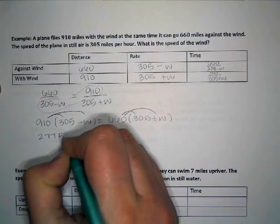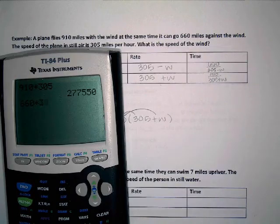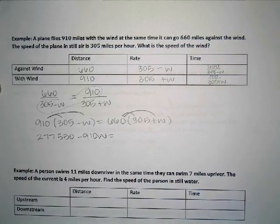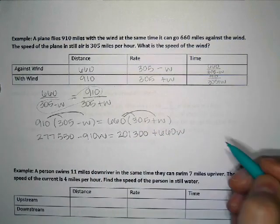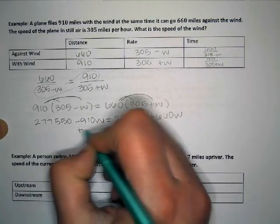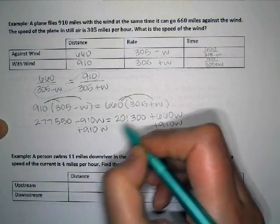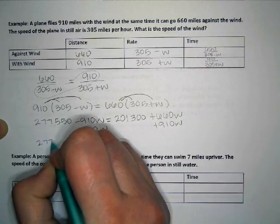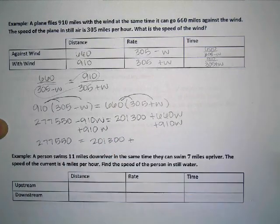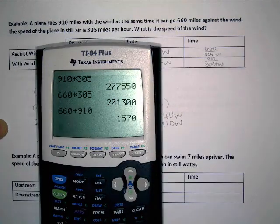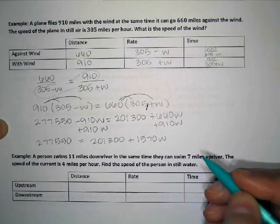And then we can go ahead and distribute. 277,550 minus 910W equals 201,300 plus 660W. And then I'm going to get my W's to one side. And that's 1,570 W's. I'm going to go ahead and subtract this number over.